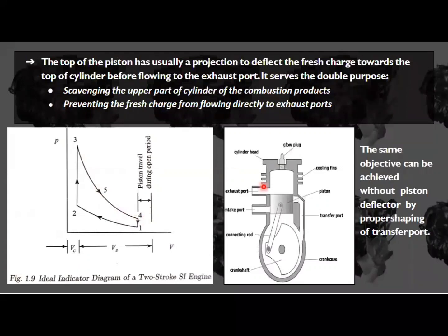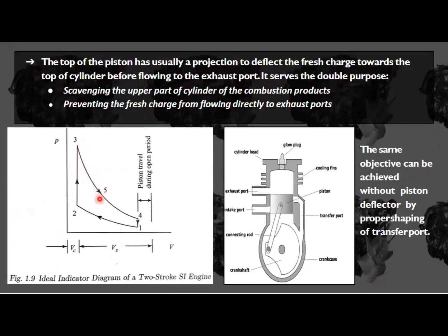Process 3-5 is the exhaust event. During this event, whatever combustion products are present leave the cylinder to the atmosphere. This process is shown in the middle of the expansion stroke (between 3 and 4) because in a two-stroke engine the exhaust happens during the expansion stroke itself. That is why in the two-stroke indicator diagram, the exhaust event occurs during the expansion stroke.